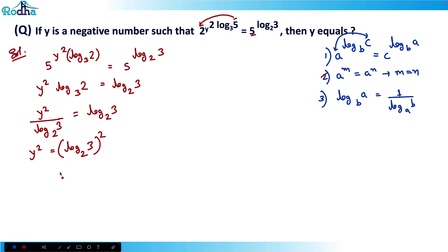Y square is equal to log of 3 base 2 whole square. So now y, if I take value of y here, I have two values here. It will be minus of log 3 base 2 and plus of log 3 base 2.